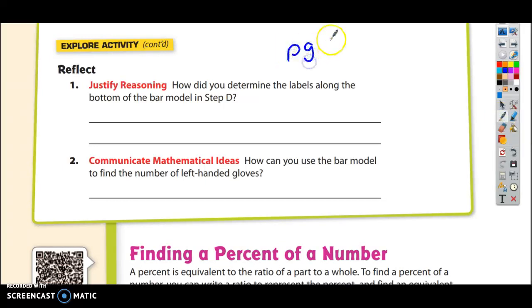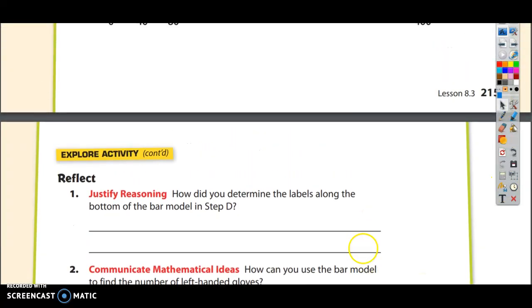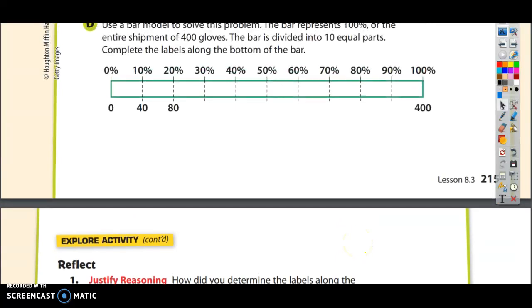Alright, this is page 216. Question number 1 reads, how did you determine the labels along the bottom of the bar model in step D? So I've got to go back a page, all I have to do is just scroll up. How did I determine the labels? Well we counted by 40, that's all we really did.